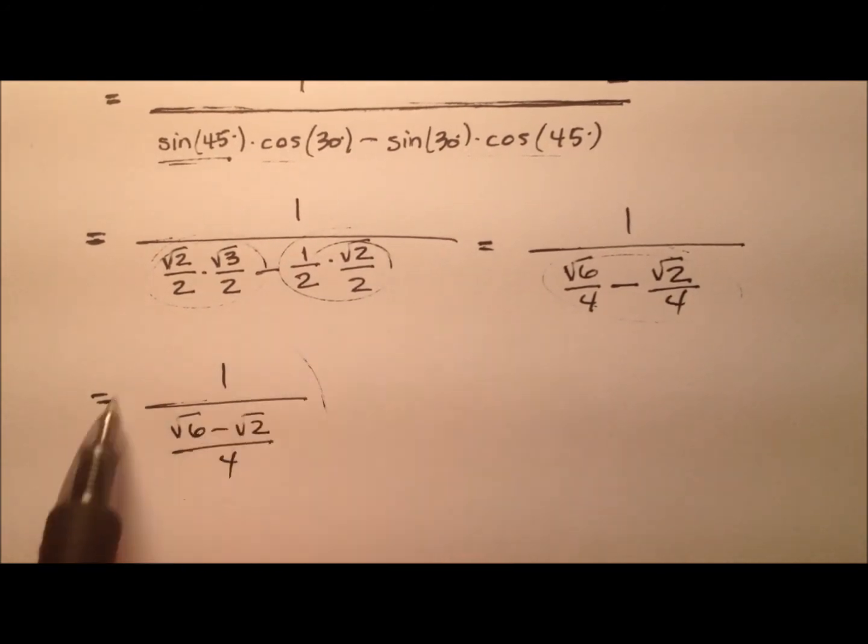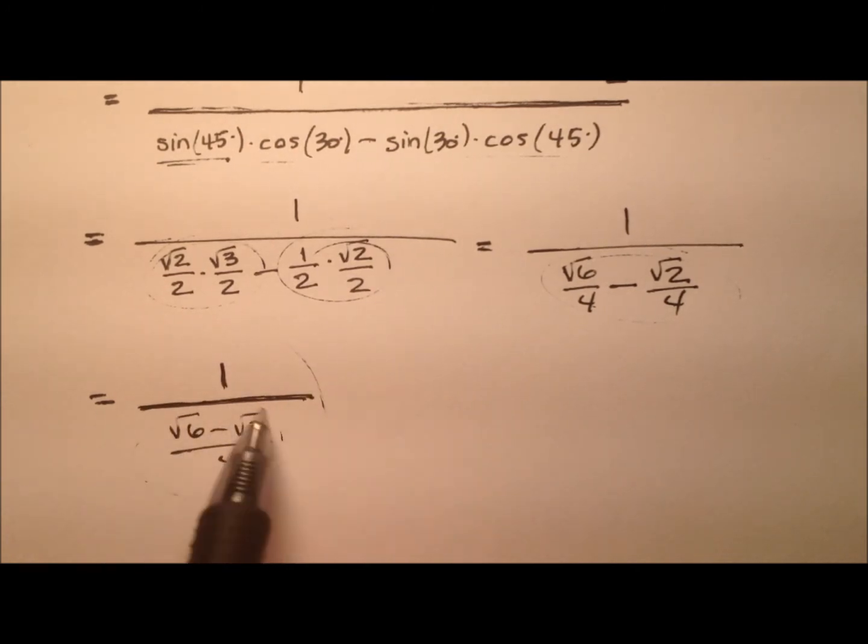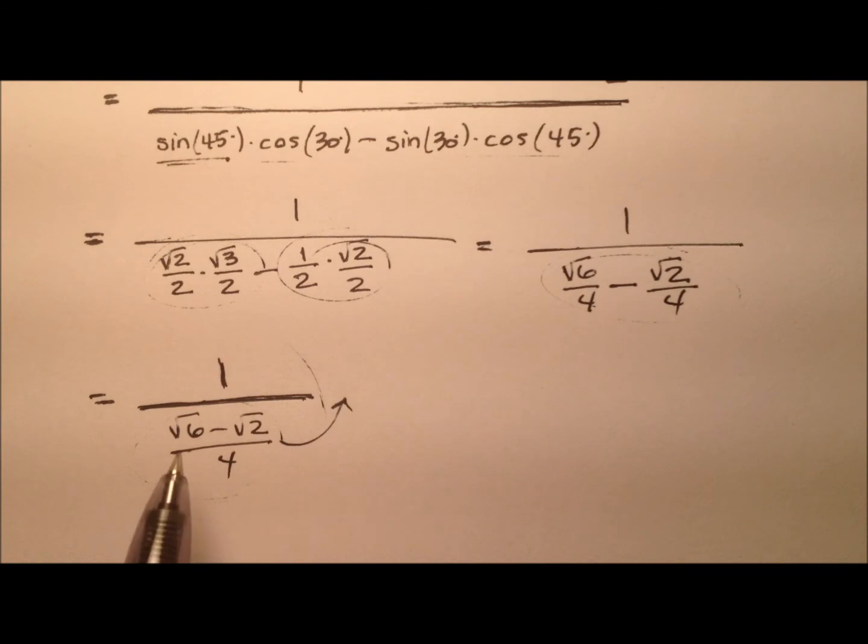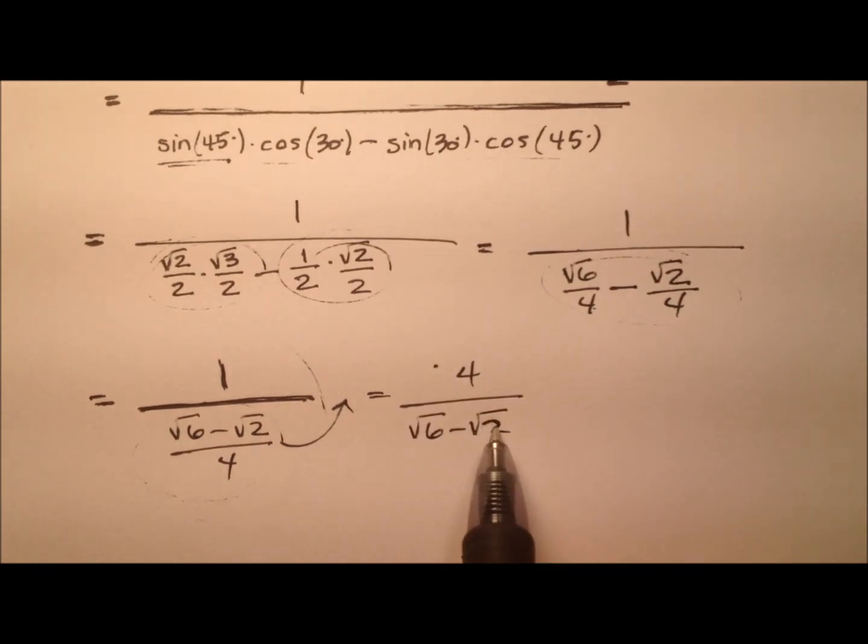We have this complex fraction. It's 1 over this entire thing. What we can do is take the reciprocal of this denominator and bring it up. Since it's multiplying by 1, which doesn't change anything, we have 4 over √6 minus √2.